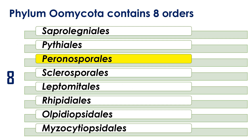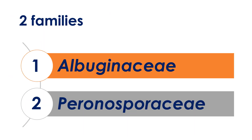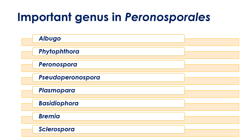As I told you, Phylum Oomycota contains eight orders. Saprolegniales and Pythiales have already been discussed. Now it's time for Peronosporales. Peronosporales generally contain two families: Albuginaceae and Peronosporaceae. The important genera under Peronosporales are Albugo, Phytophthora, Peronospora, Pseudoperonospora, Plasmopara...